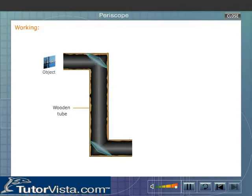Working: The upper or top mirror forms an image of the object. This image acts as the object for the second mirror at the lower end and produces an image which is seen by the observer. Let us now understand the working of a periscope with the help of a ray diagram.